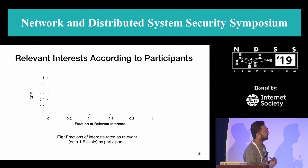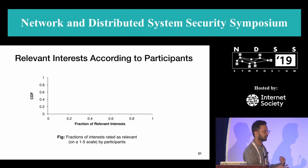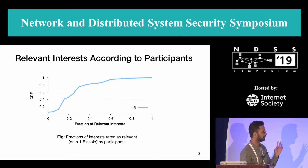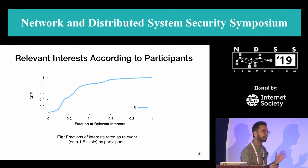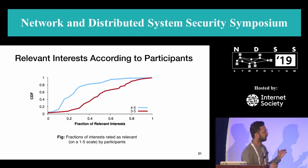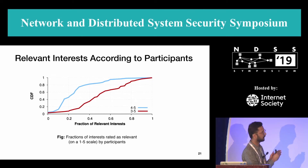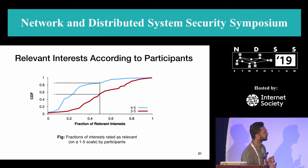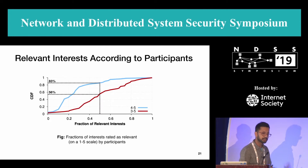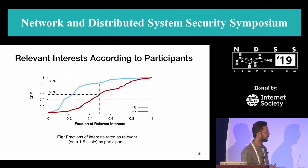In this graph I show the fraction of interests marked relevant on a scale of one to five, with five being most relevant and one being least relevant, as a CDF of participants. Looking at interests rated four or five, a lot of interests are not marked as relevant. If I relax the assumption to include three-to-five as relevant, the numbers get higher. In the more restricted case, 83% of users found the majority of interests less relevant, but this number drops to 56% when relaxing the constraint.